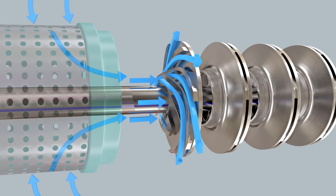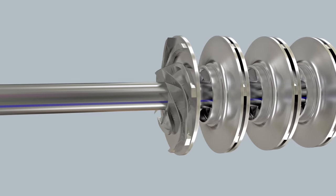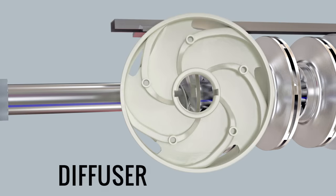This way, the water particles gain both kinetic and pressure energy. Now we need to pass this outlet water to the next impeller efficiently. A stationary device, called a diffuser, is used for this purpose.